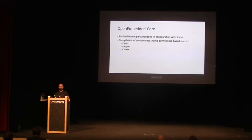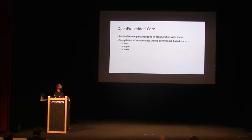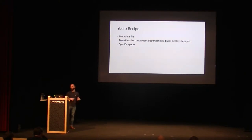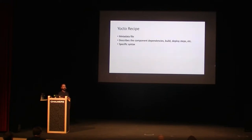What is OpenEmbedded core? It evolved from OpenEmbedded in collaboration with Yocto and is now a collaboration of components shared between OpenEmbedded-based systems — those components are layers, recipes, and classes. The base part of how we define a software component inside the Yocto build system is the recipe. There's an analogy to cooking: BitBake, recipes, even a baker part. A Yocto recipe is essentially a metadata file, comparable to a makefile in Buildroot. It describes the components, dependencies, build and deploy steps. The main difference from PTXdist and Buildroot is that it has its own specific syntax, which was a bit puzzling the first time I looked at it.